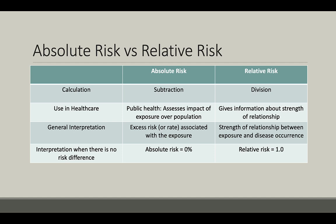The interpretation when there is no risk difference: for absolute risk, this would be 0% or 0, because if there is no difference between groups and you are doing subtraction, your result is going to be 0. Whereas with relative risk, since it's division, if there's no difference between the two groups, the relative risk is going to equal 1.